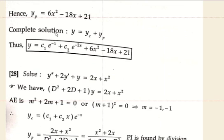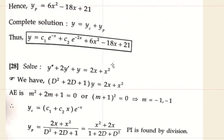The complete solution is y = yc + yp. Therefore, y = c₁e^(−x) + c₂e^(−2x) + 6x² − 18x + 21.